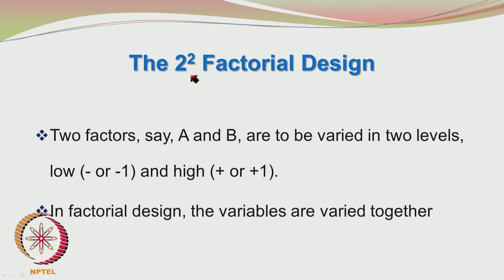Welcome back to the second half of this lecture. We are looking at the factorial design of experiments. We will start with the simpler design involving 2 factors at 2 levels. The superscript 2 refers to the number of factors. So we are going to have a 2² design, that means only 4 experiments to see the effects of 2 factors.